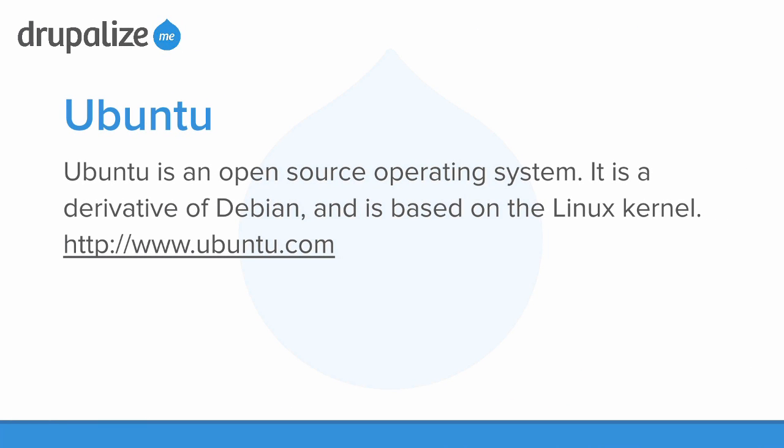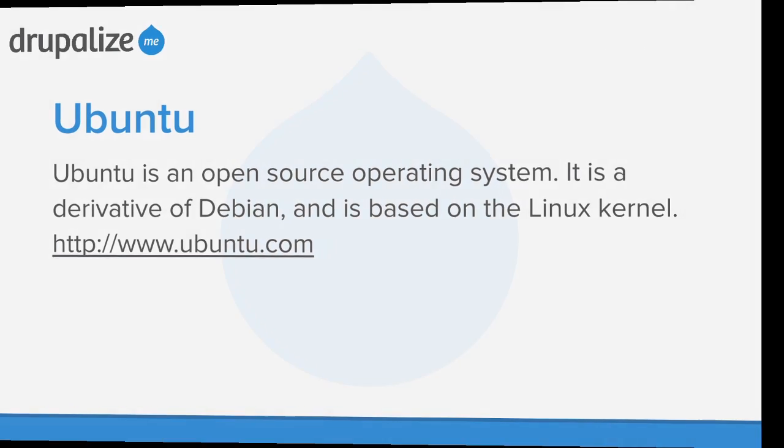Next is the actual operating system that we install as a base box. We'll be using Ubuntu. Ubuntu is an open source operating system. It's a derivative of Debian and based on the Linux kernel. We'll be using Ubuntu as our base box when we create our virtual machine.